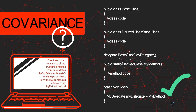Covariance permits a method to have a return type that is more derived than that defined in the relevant delegate. If you are unfamiliar with what it means for a class to be more derived or less derived than another class in the same inheritance hierarchy, please check out two tutorials provided by this channel on C# inheritance and C# polymorphism. Links can be accessed from the cards in the top right corner and in the description below.